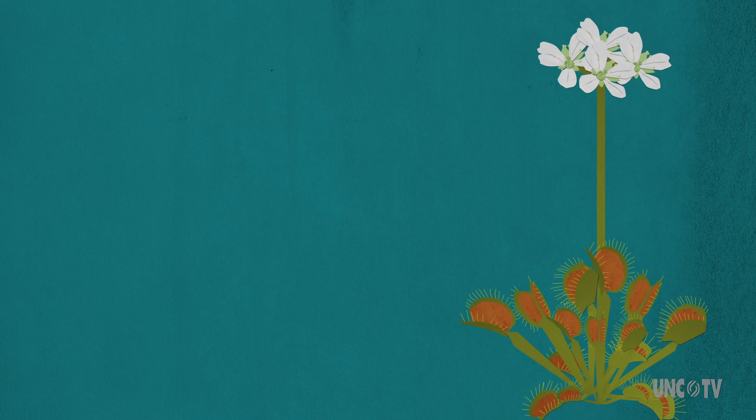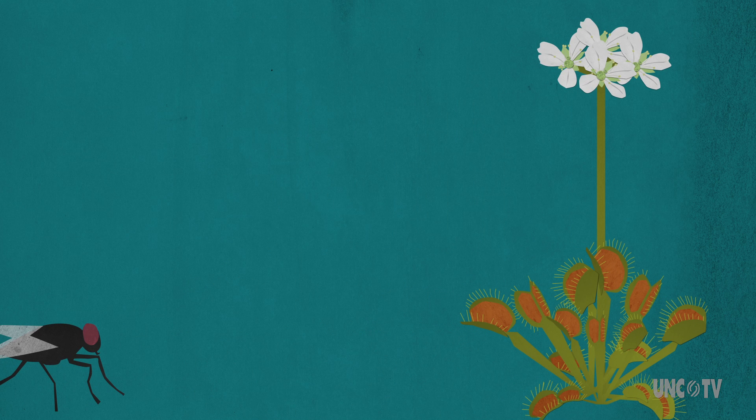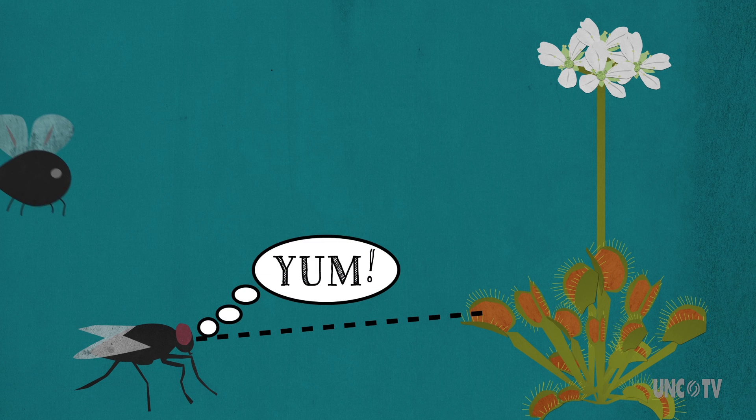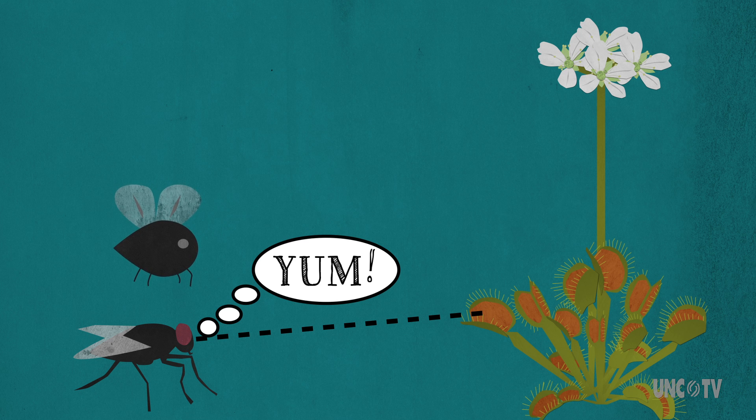Secondly, the flowers may appeal to a different set of insects altogether. For a plant that eats lots of carrion-seeking insects that are attracted to that meaty-colored interior, the type of pollinator attracted to its flower may not even give the traps a second look.